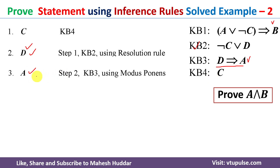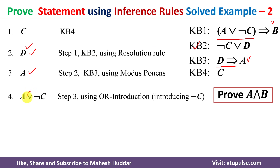Now we have A, but to get B we need A ∨ ¬C. If we have A ∨ ¬C then we will get B using modus ponens. Since A is true in step 3, and true OR anything is true, we can introduce OR here. So we introduce ¬C to get A ∨ ¬C as the fourth step.